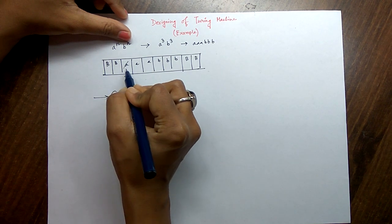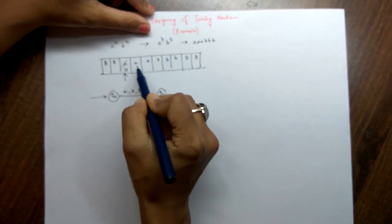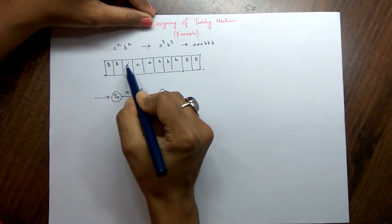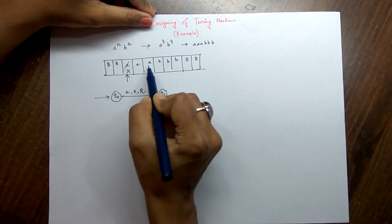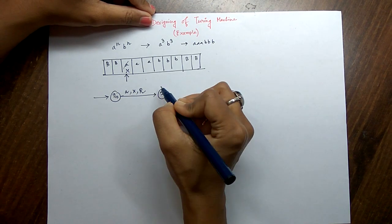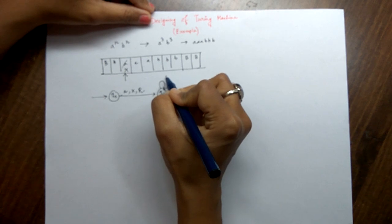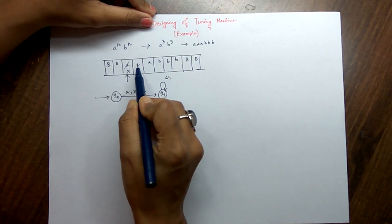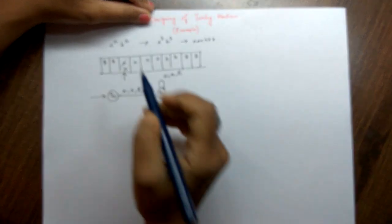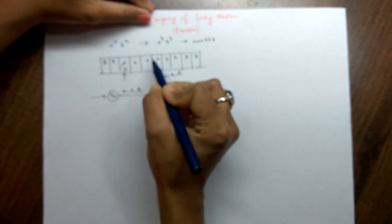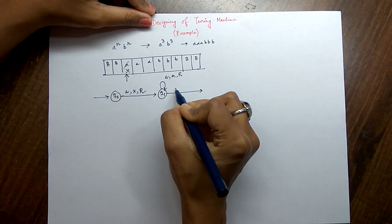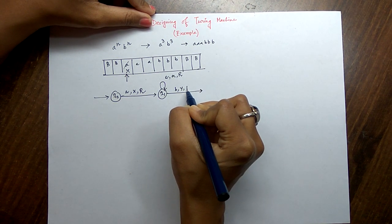When we are replacing the first a with x, we then have n minus one a's remaining — if there are three a's, two a's remain after the first. So we go right: we read the remaining a's without changing them, writing a and moving right, until the first b comes. When the first b comes, what we will do is convert it to y and the direction will then be left.